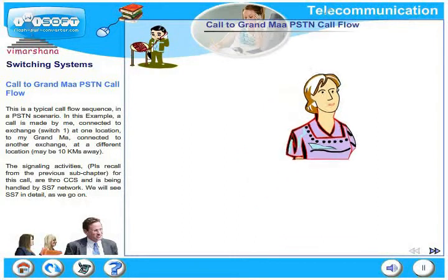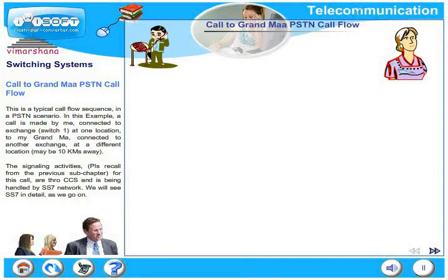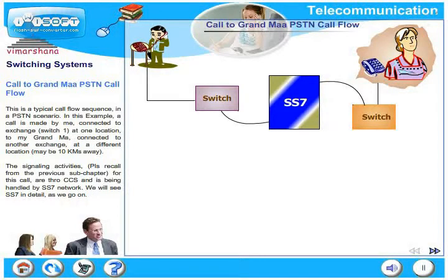I want to make a call to my grandmother. Let us try and trace a complete PSTN call flow. Look at the figure which is animated. This is a typical call flow sequence in a PSTN scenario. In this example, a call is made by me, connected to an exchange called Switch 1 at one location, to my grandma connected to another exchange at a different location, maybe 10 kilometers away.